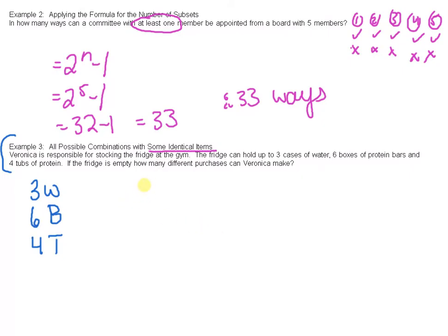How many different purchases can Veronica make? Well, she can make, so there's water and she can either buy water or don't buy water. There's boxes of protein, buy or don't buy. And then there are tubs of protein, buy or don't buy.